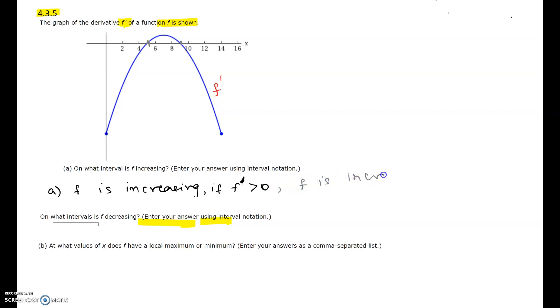The function is decreasing when the derivative is negative. f is decreasing whenever the derivative graph is below the x-axis, on [0, 5] union [9, 14].